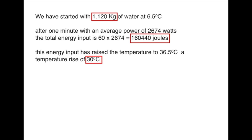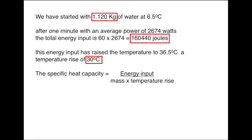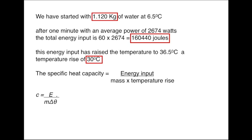From the equations shown at the start of the video, the specific capacity is the energy input divided by the mass times the temperature rise, in symbol form C equals E over M delta theta.